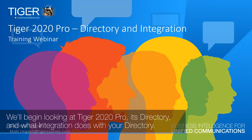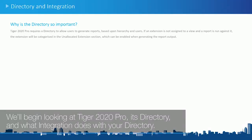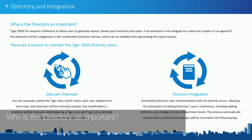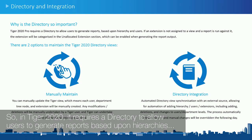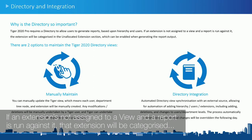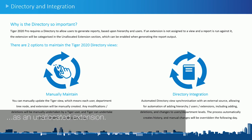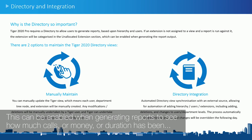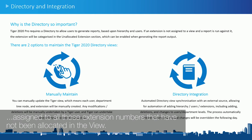We'll begin looking at Tiger 2020 Pro, its directory and what integration does with your directory. Why is the directory so important? In Tiger 2020, it requires a directory to allow users to generate reports based upon hierarchies and users. If an extension is not assigned to a view and a report is run against it, that extension will be categorized as an unallocated extension. This can be enabled when generating reports to see how much calls, money, or duration has been assigned to all those extension numbers that have not been allocated in the view.